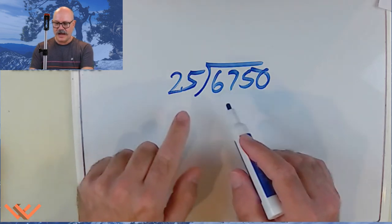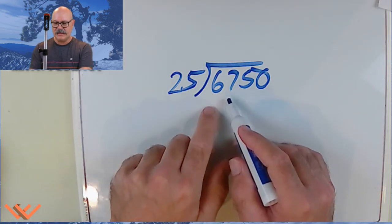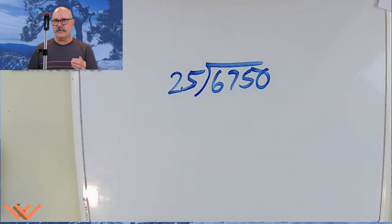So, 25. How many 25's can I fit inside that 67? Well, I can do 25 plus 25 is 50. That fits. If I add 25 more, that would be 75. That does not fit.